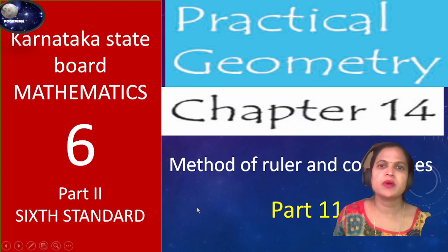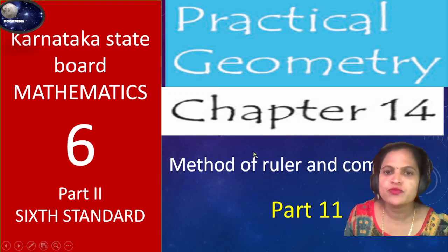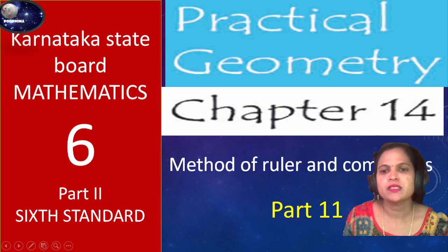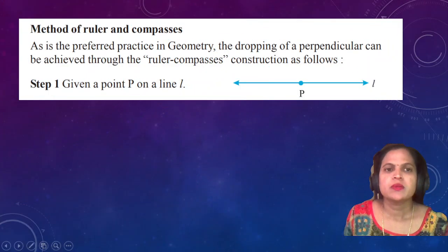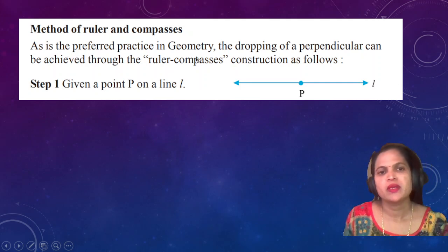Welcome to Mathematics 6 Standard Part 2, Practical Geometry, Chapter 14, Method of Ruler and Compasses, Part 11. Method of Ruler and Compass: As is the preferred practice in geometry, this is the most famous method. The dropping of a perpendicular can be achieved through the ruler and compass construction as follows.